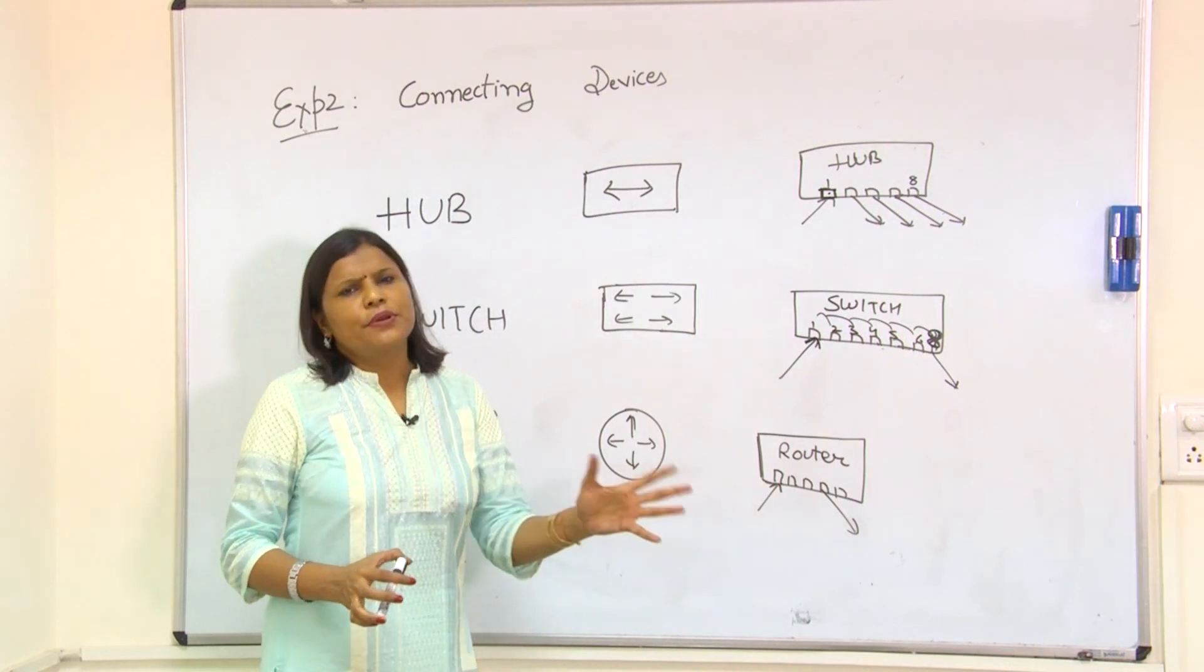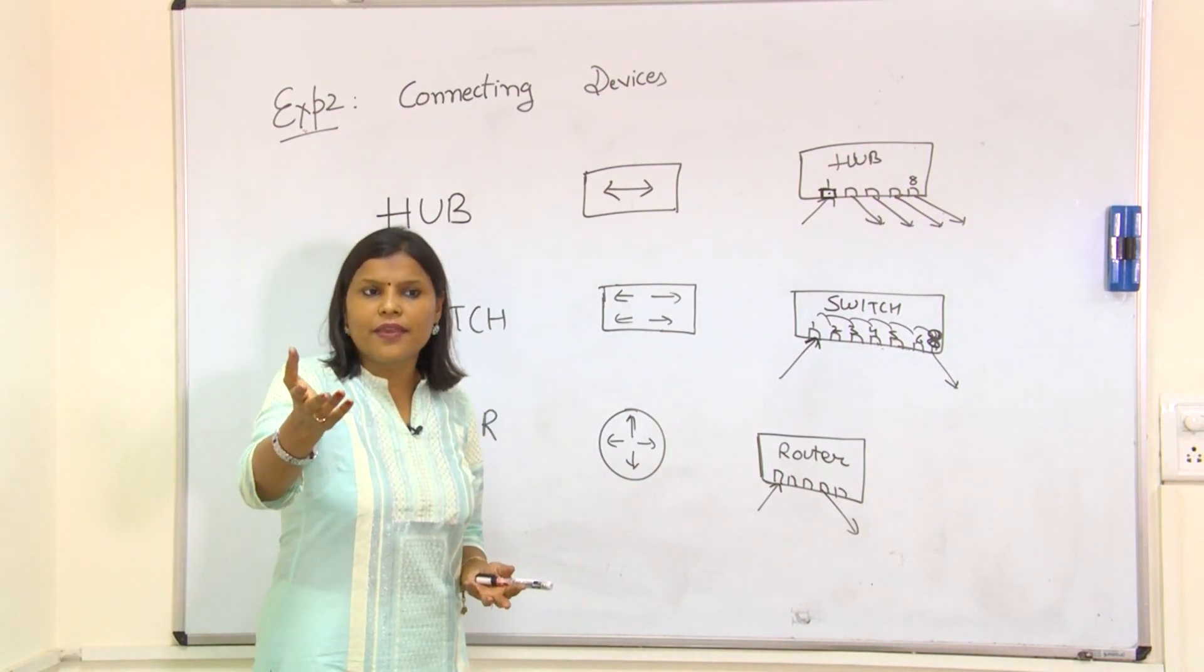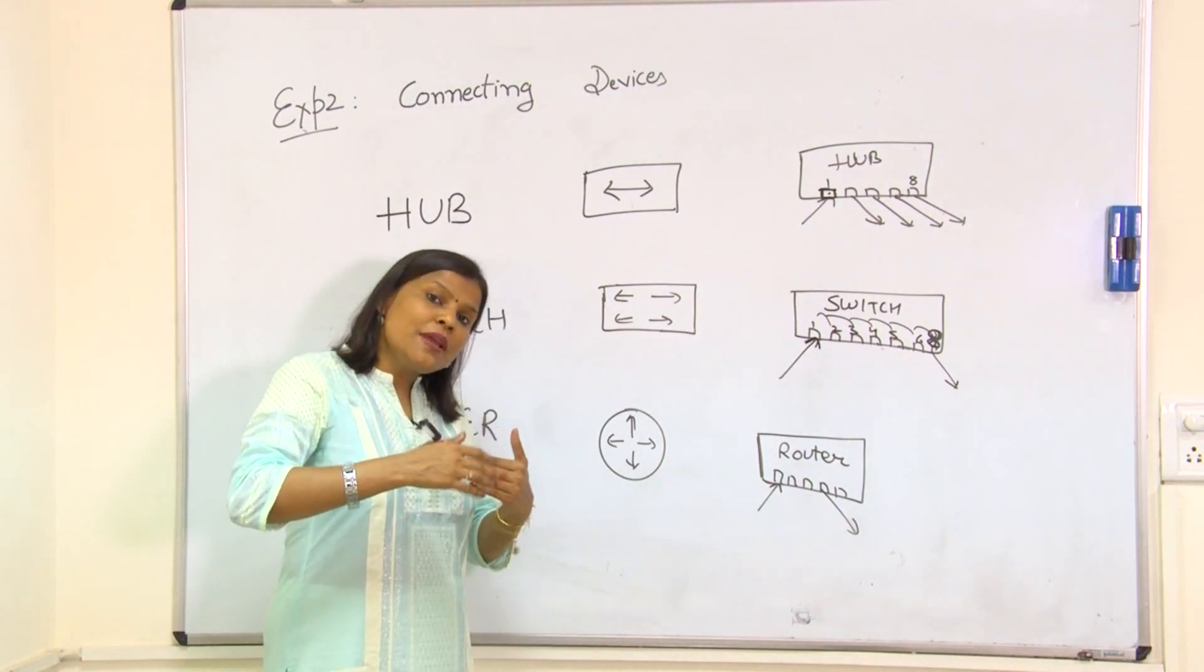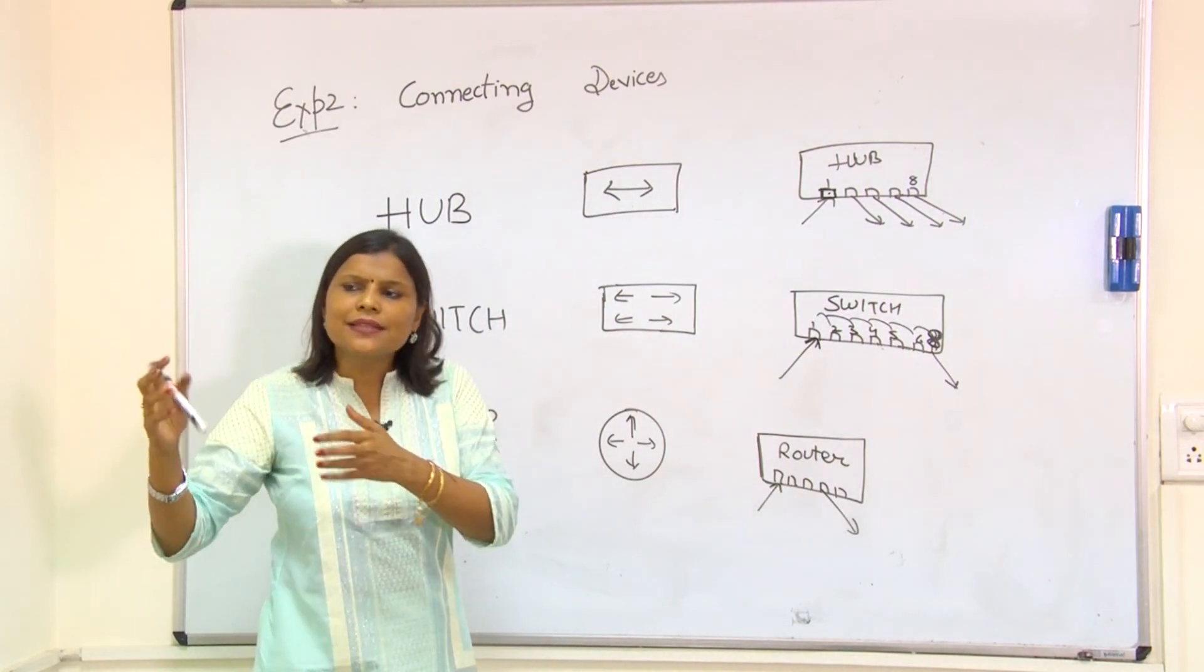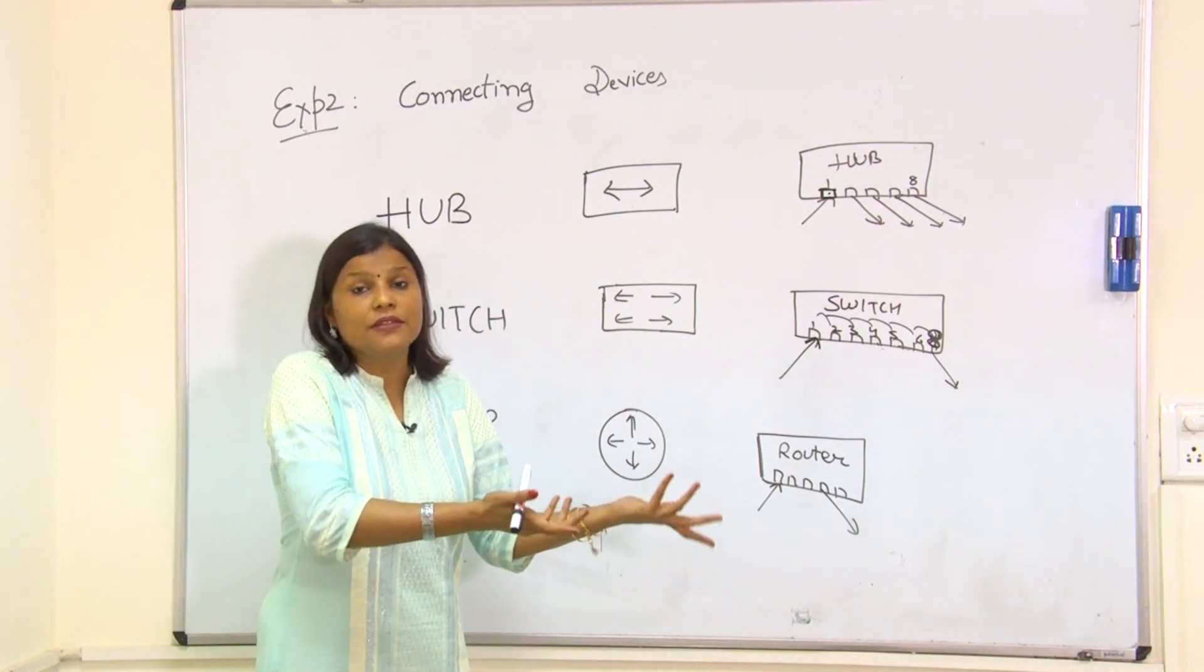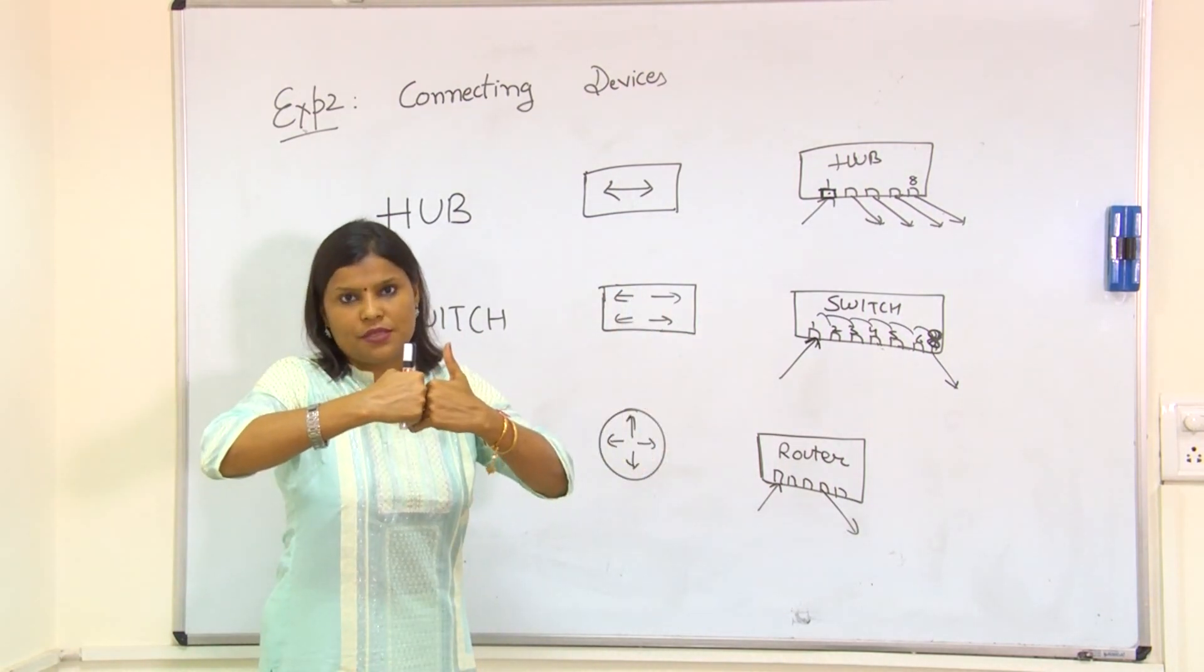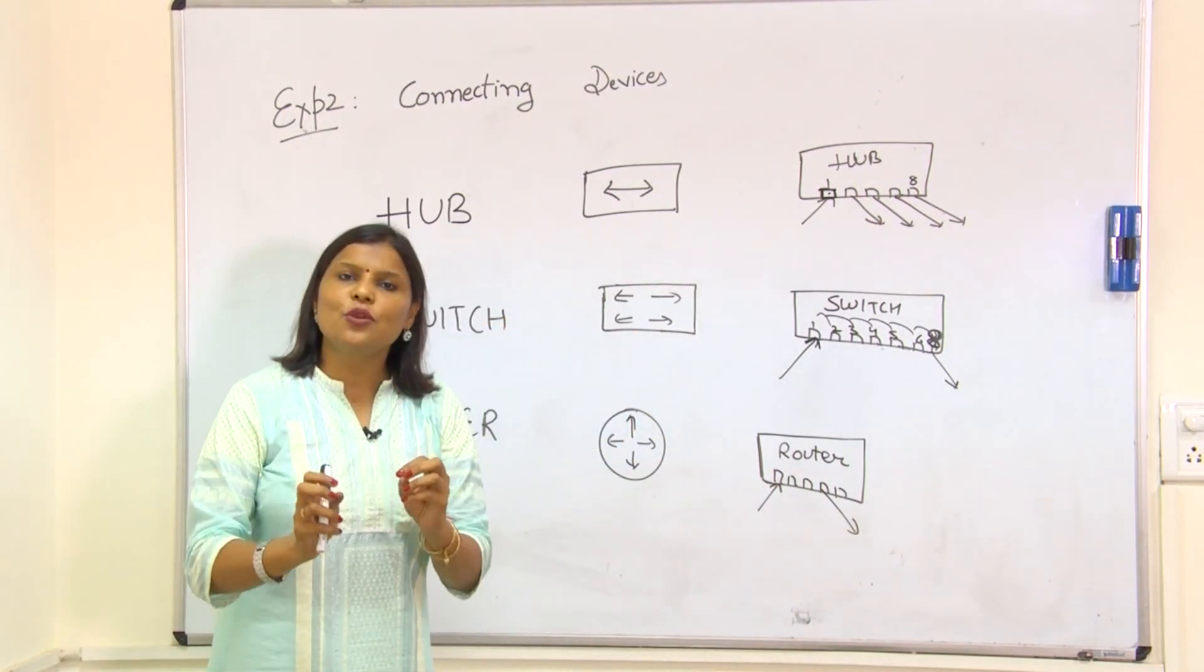For example, I have a Gmail account and you have a Yahoo account, and I want to send mail from Gmail to Yahoo. Gmail has a different network, Yahoo has a different network. When you want to connect two different networks or send a packet from one network to another different network, you need a router.